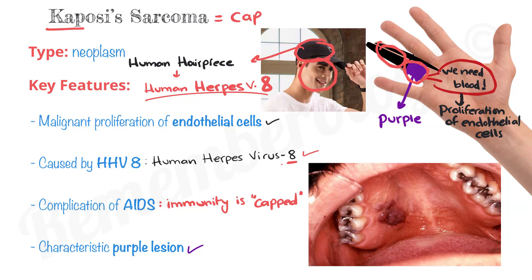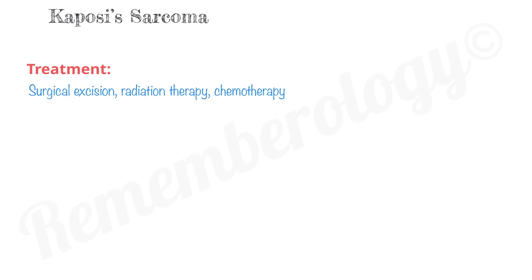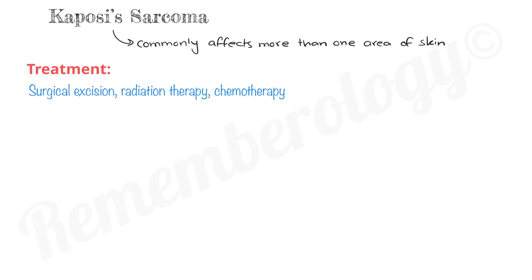Now let's move on to the treatment of Kaposi's sarcoma: surgical excision, radiation therapy, and chemotherapy. Kaposi's sarcoma commonly affects more than one area of the skin, so it has kind of metastasized without really metastasizing, which is why we supplement with radiation therapy and chemotherapy.